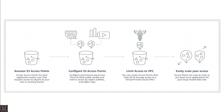We have to configure permissions per access point to limit public access, and we can restrict access by object prefix and object tags. We can also limit access to a VPC by creating access points that restrict all S3 storage access to a virtual private cloud. Access points are also easy to scale as you build more applications for large shared data sets.